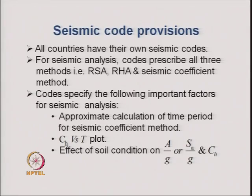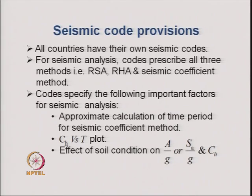Codes specify the following important factors for seismic analysis: first, the approximate calculation of time period for the seismic coefficient method; second, a seismic coefficient versus time period plot; and third, the effect of soil condition on SA/g or the spectral acceleration normalized with respect to g and the seismic coefficient.